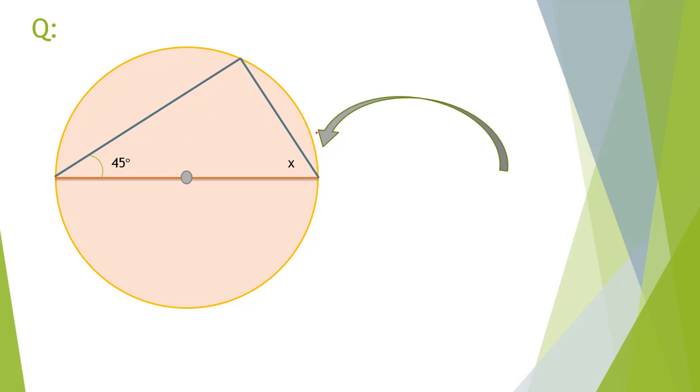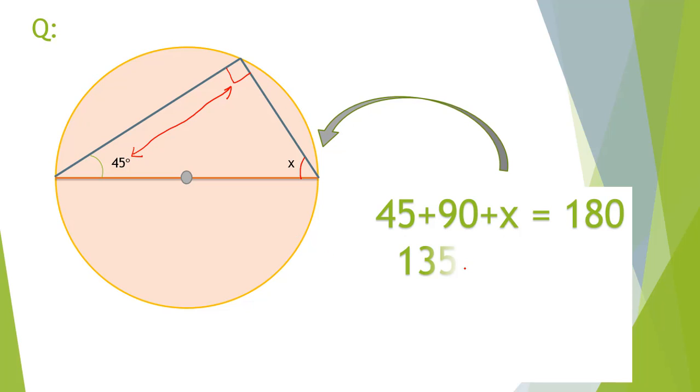This question is very favorite of examiners. Whichever exam you are preparing, this question is very important. We know that inscribed angle is 90 degrees. We know the value of another angle that is 45 degrees. We can subtract the sum of these two angles from 180 degrees, because sum of all angles inside triangle is 180 degrees. Angle x is 45 degrees.